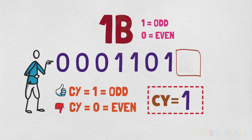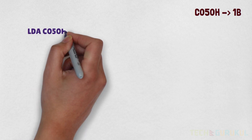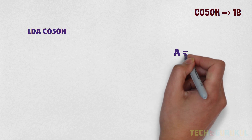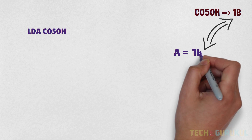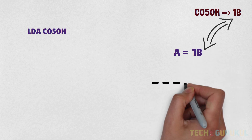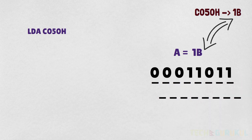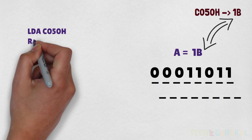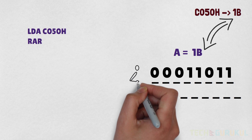We will assume that memory location C050H contains 1B. First of all, we load the accumulator from C050H, so the accumulator now holds 1B, which is 0001 1011. Then we perform a right shift using the RAR command — Rotate Accumulator Right.